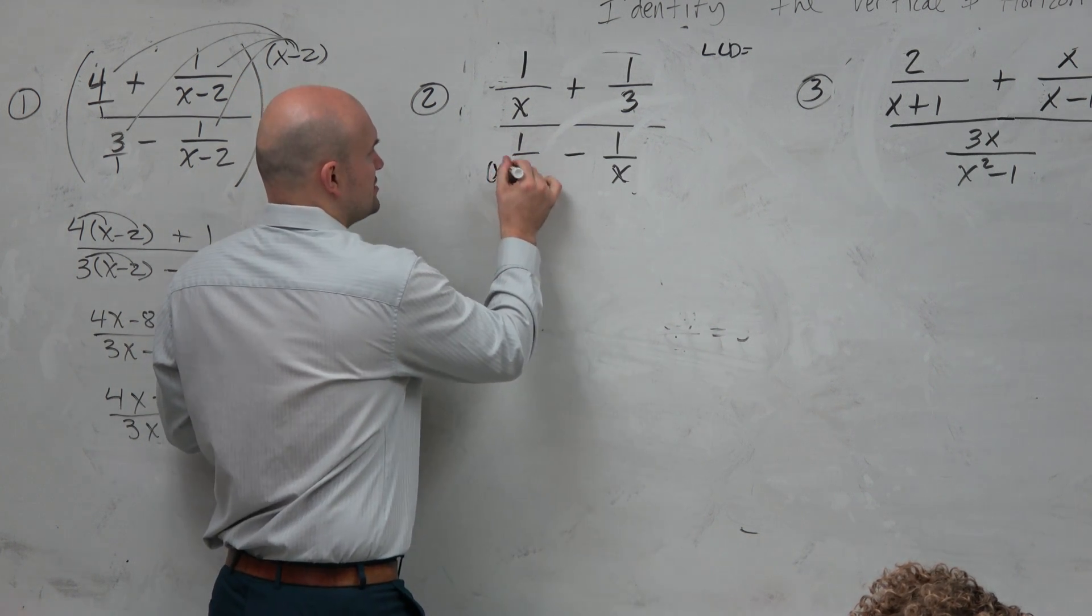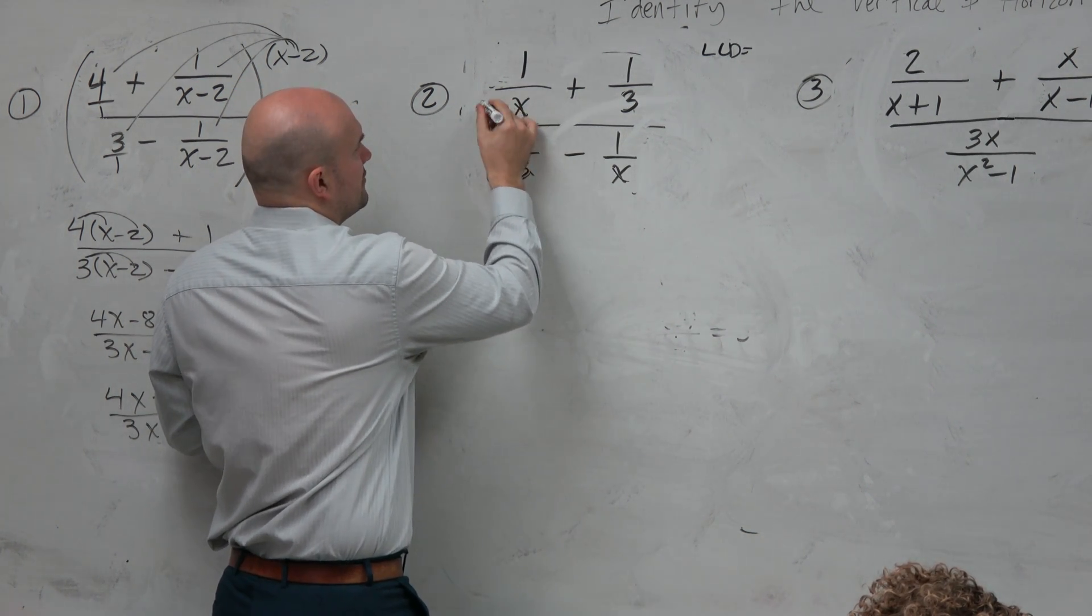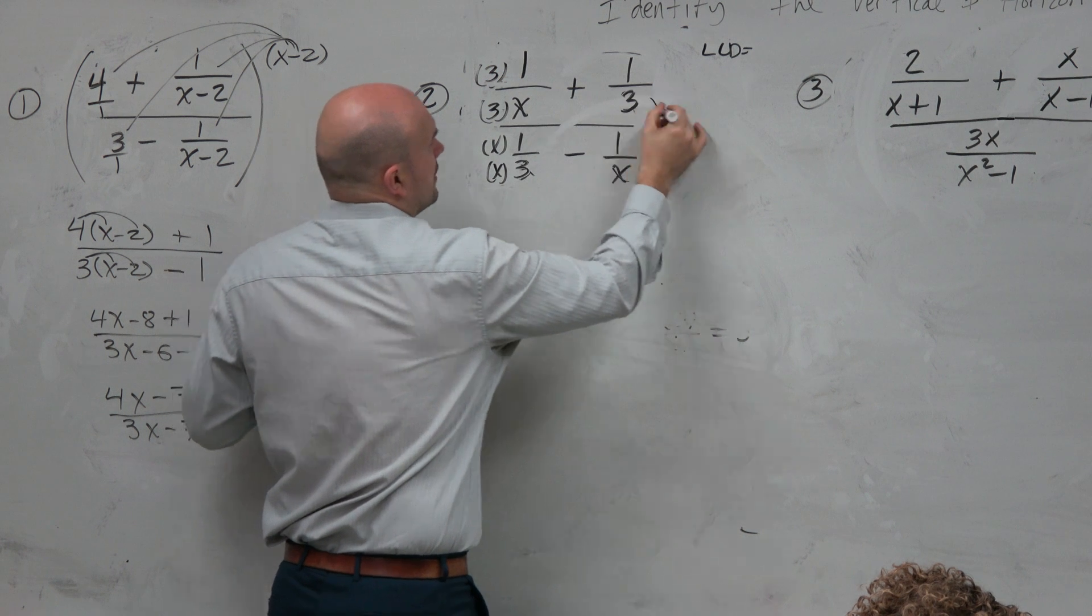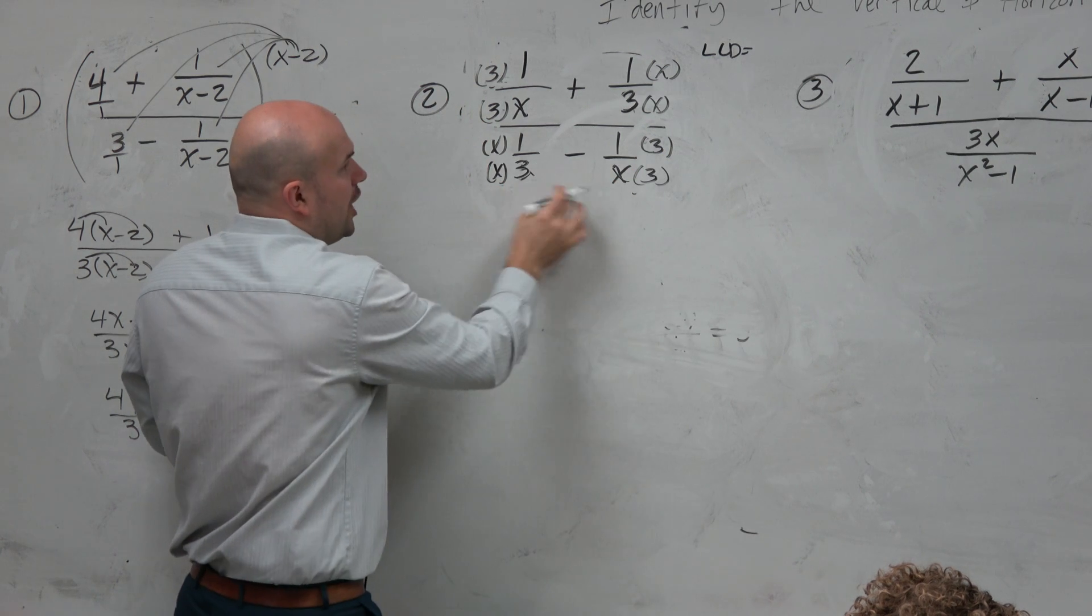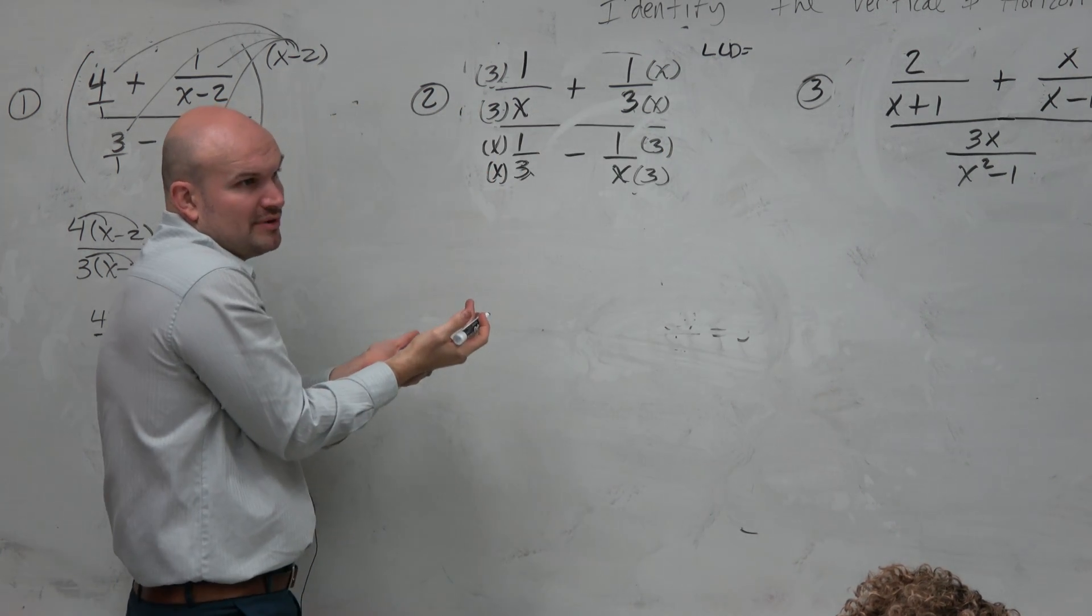So what I'll do over here is I'll multiply by x over x, 3 over 3, x over x, and 3 over 3. Now, they all have the same denominator. I can just take the numerators.